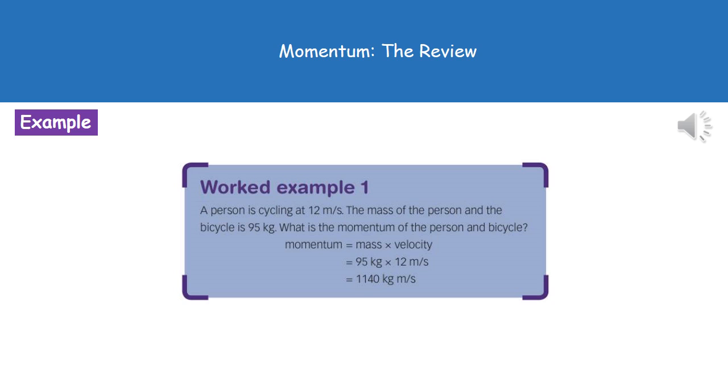To give you an example of the kind of question you might see for this then: The person is cycling at 12 meters per second, the mass of the person and the bicycle is 95 kilograms. What is the momentum of the person and bicycle?